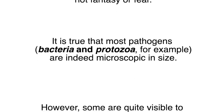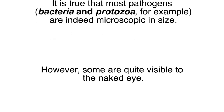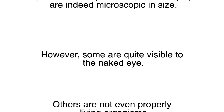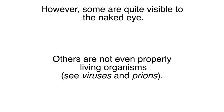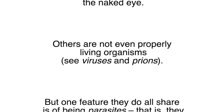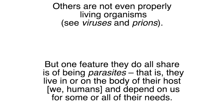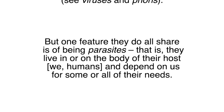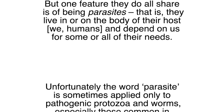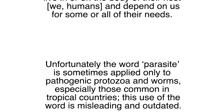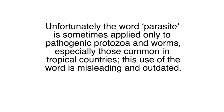However, some pathogens are quite visible to the naked eye. Others are not even properly living organisms — see viruses and prions. But one feature they all share is being parasites: they live in or on the body of their host — we humans — and depend on us for some or all of their needs. The word parasite is sometimes applied only to pathogenic protozoa and worms, especially those common in tropical countries, but this use of the word is misleading and outdated.